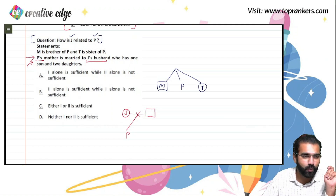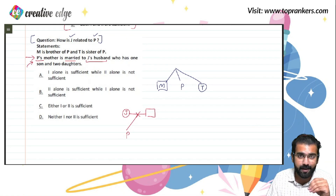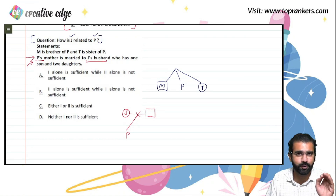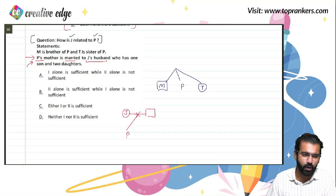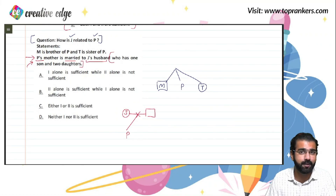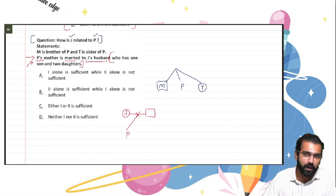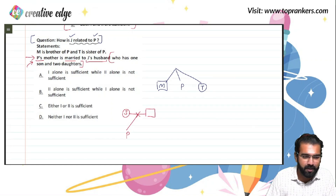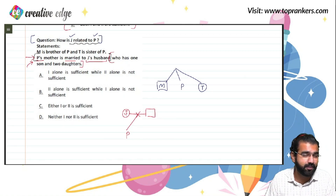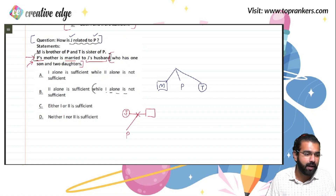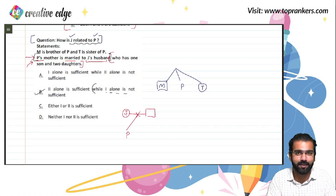Statement 2 also mentions who has one son and two daughters, but that data is completely unnecessary here because we were only asked how J is related to P, and that relationship is already determined. Statement 2 alone was sufficient. Statement 1 alone was not sufficient. So I mark option B, and this is how you get the answer to this question.